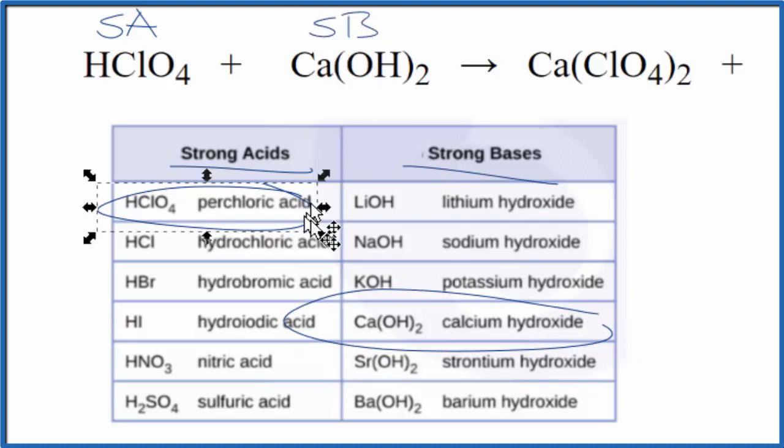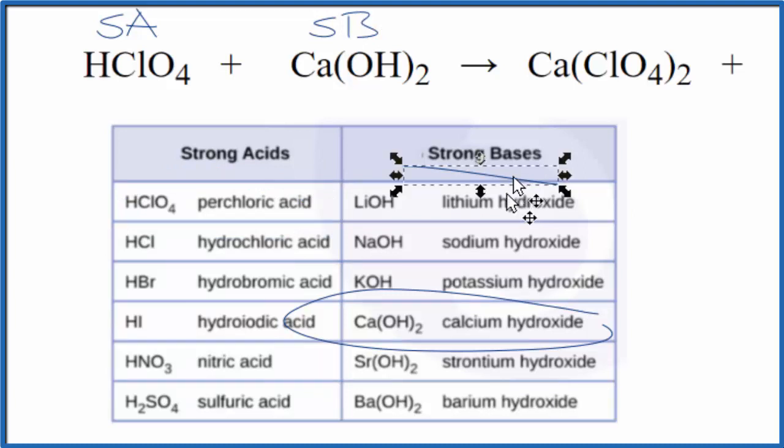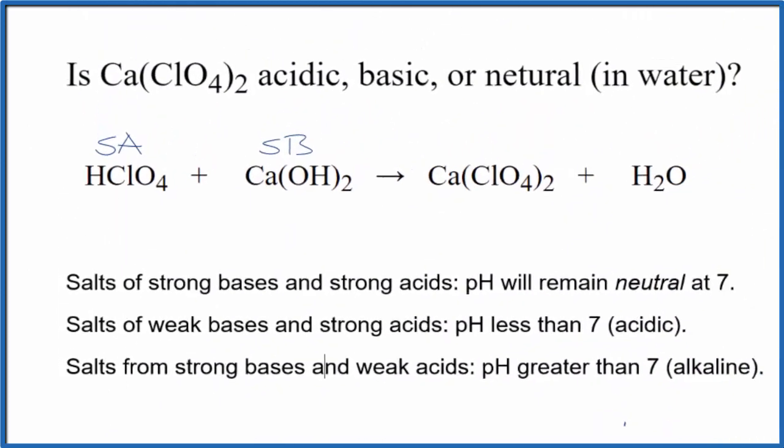So we know the strength of the acid and the base. Now we can use the rules to figure out whether Ca(ClO4)2 is acidic, basic, or neutral when dissolved in water.